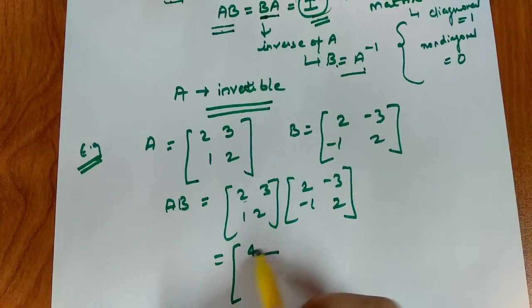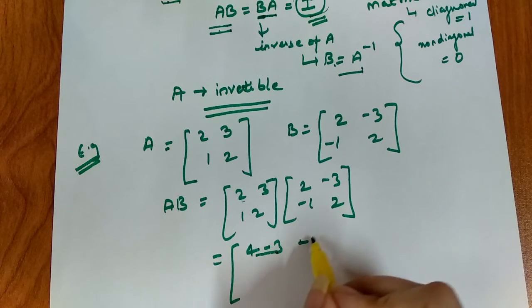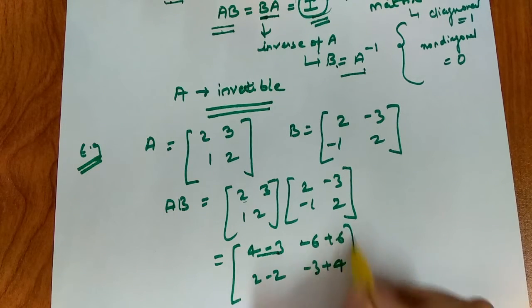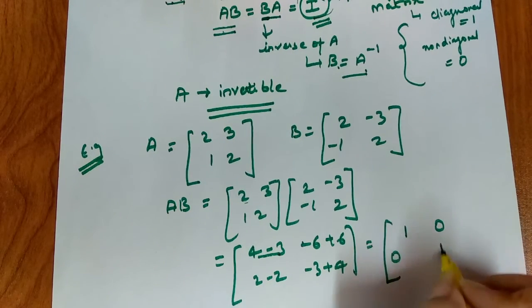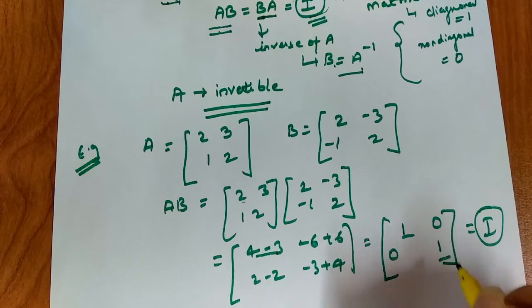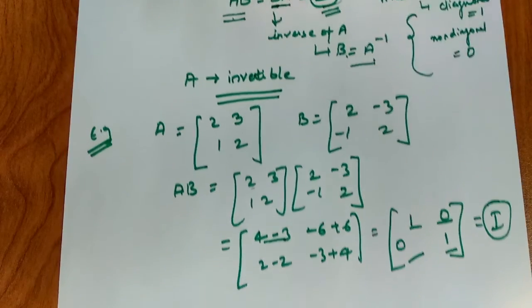So the resultant matrix is 4 minus 3, minus 6 plus 6, 2 minus 2, minus 3 plus 4. So now when we compute this: 4 minus 3 is 1, 0, 0, and 1. So this is your identity matrix. Our diagonal elements are 1 and the non-diagonal elements are 0. So when we computed AB, AB is equal to the identity matrix.